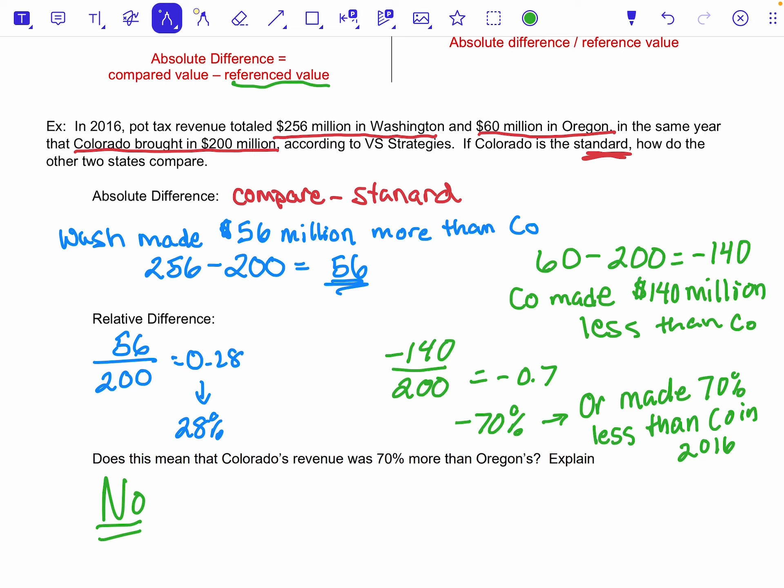And so my percent change would actually be 233%, which is a totally different number. And so the basics is, because the reference values changed.